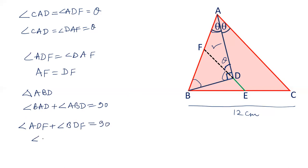So these two equations are equal. Angle BAD plus angle ABD equals angle ADF plus angle BDF. Now see, angle BAD is theta and angle ADF is also theta. Theta cancels out. So finally, angle ABD equals angle BDF.